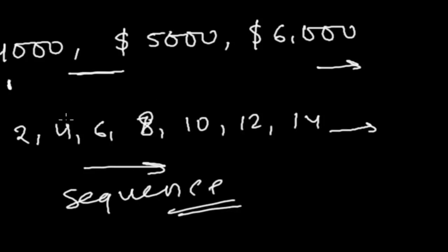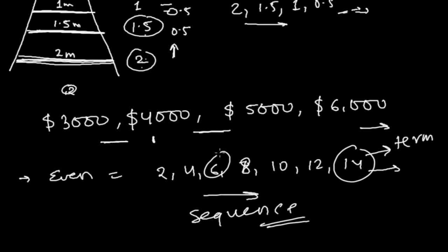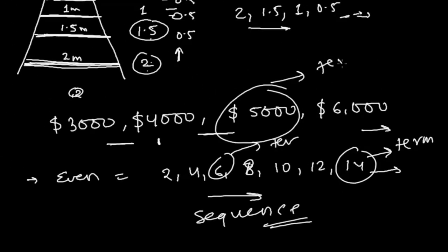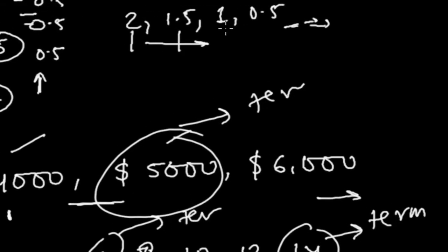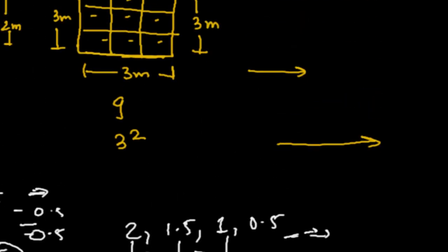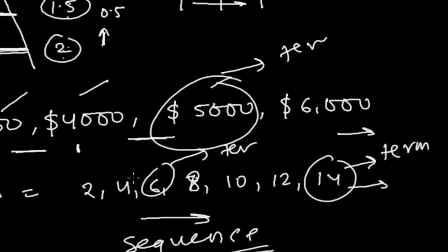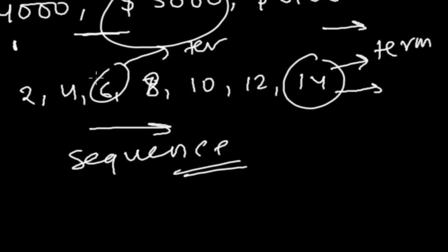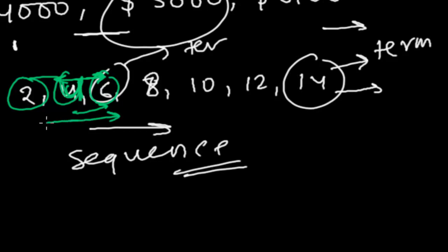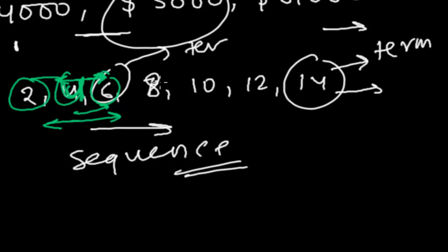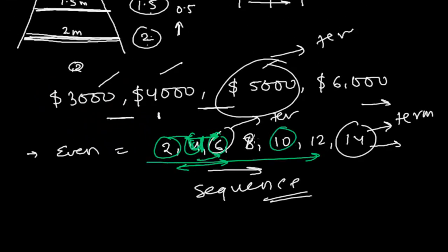A sequence has some hidden rules, and each element is called a term — first term, second term, third term, and so on. Every term is related to the one before it or after it. The second term is related to the third term, and the first term is related to the second term. There is a relationship both forward and backward, with some hidden rule throughout the entire sequence. This arrangement or listing of numbers is known as the sequence.